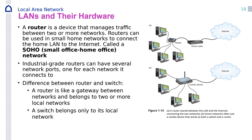The router is a very important device — it manages the traffic between two or more networks, or between your network and the outside world, like a firewall protecting your network. It can be used in a small home network to connect to the internet — we call this SOHO: small office, home office. Or there are industrial-grade routers that are more expensive and have multiple network ports. A router is like a gateway between networks and belongs to two or more local networks. A switch only belongs to one LAN.